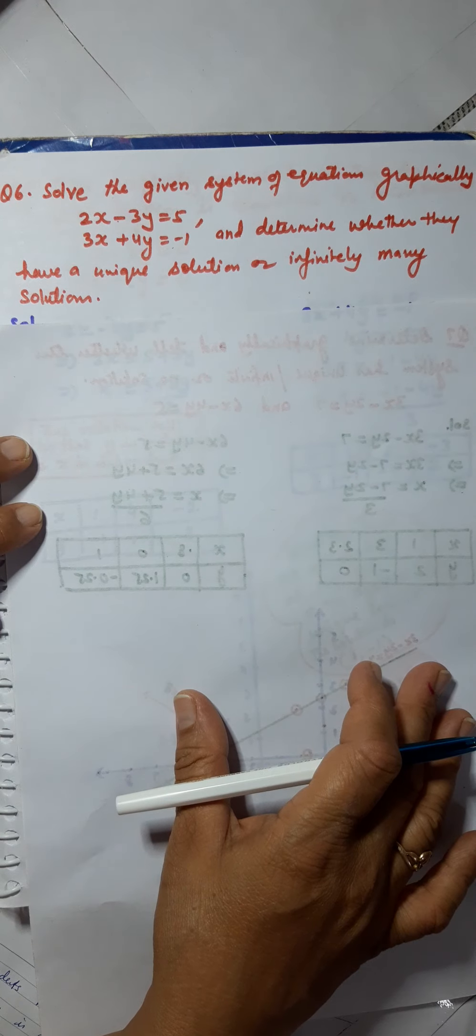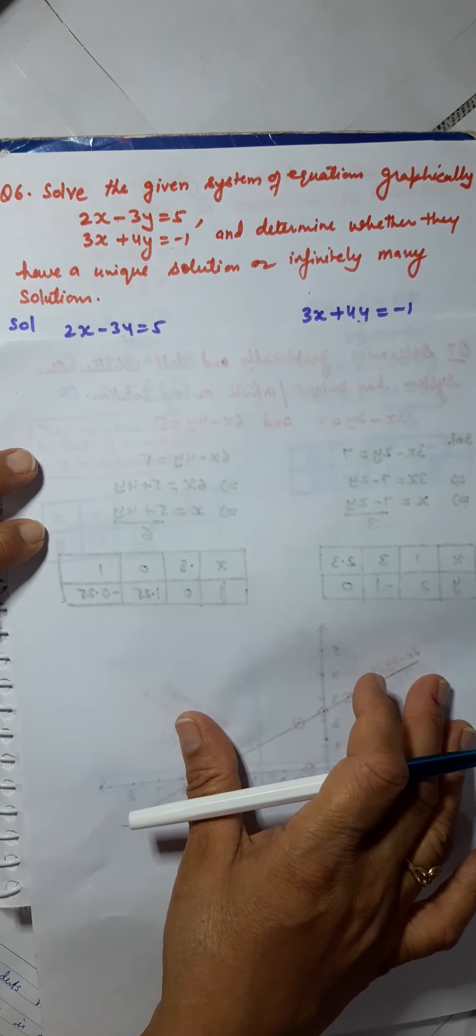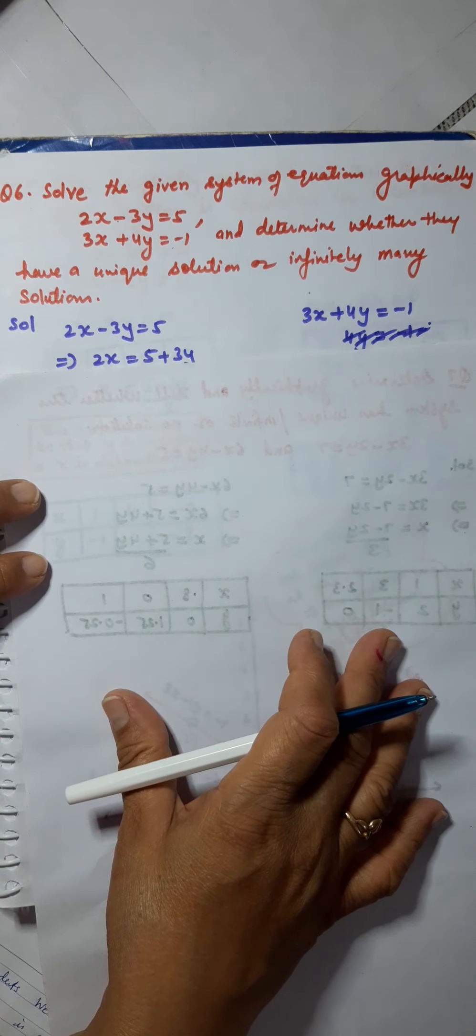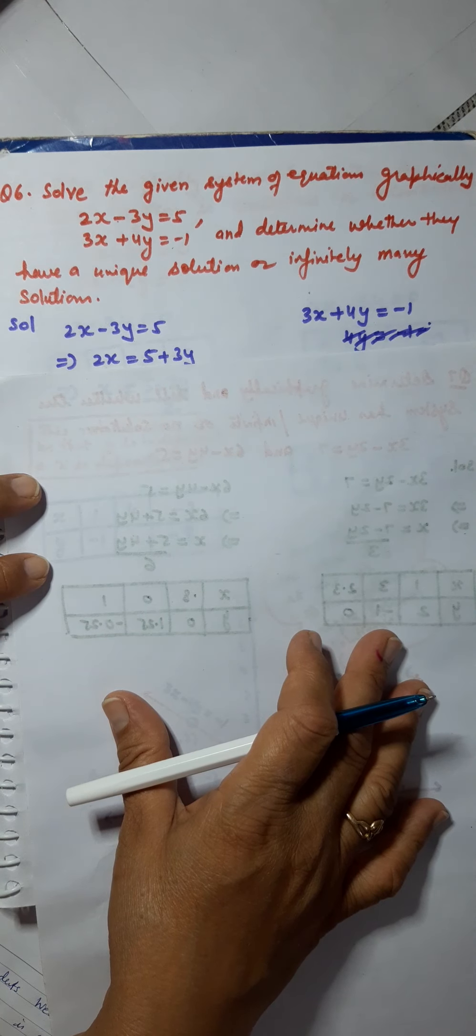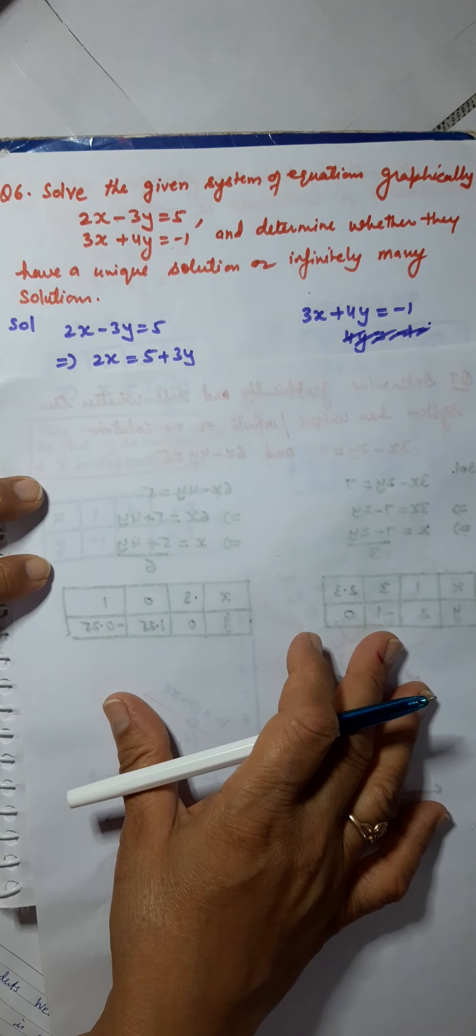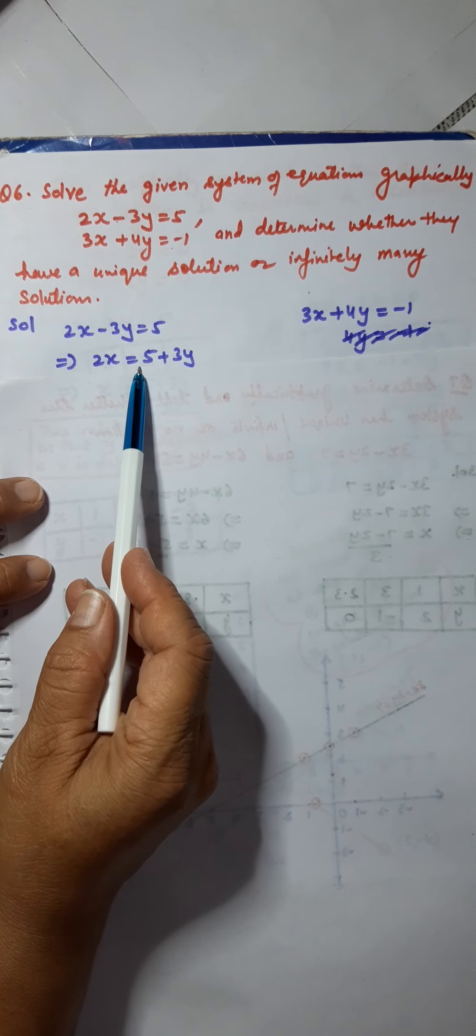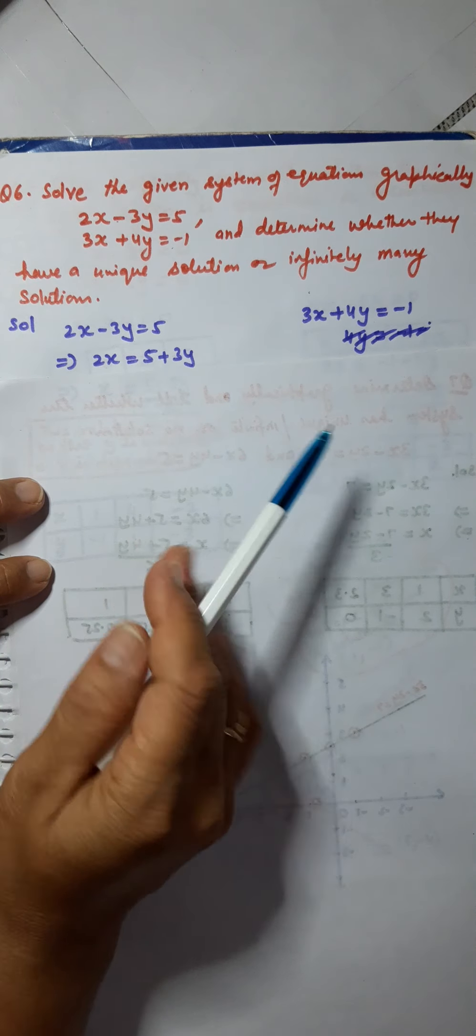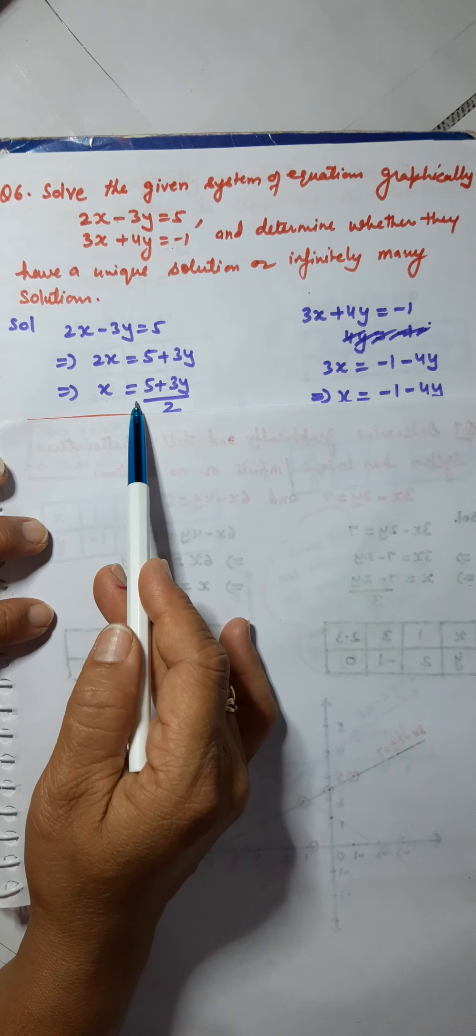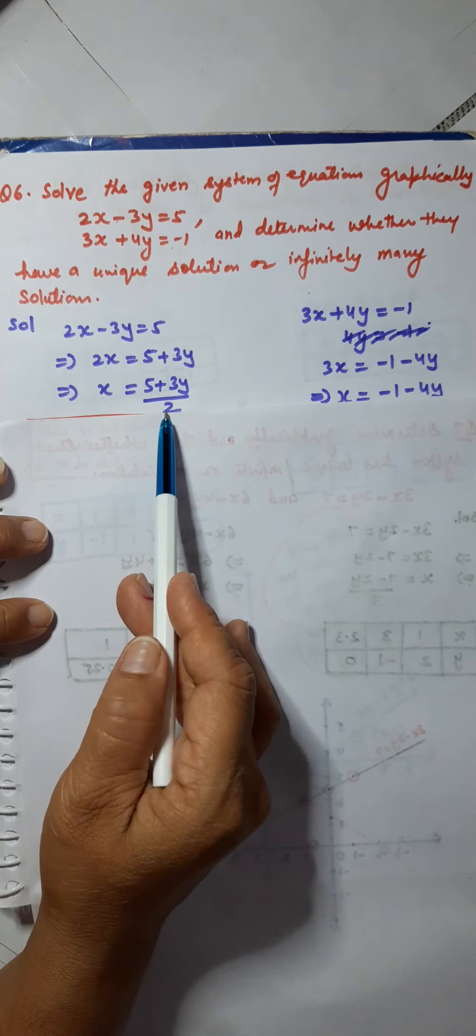As in 9th class, we have learnt how to create tables for plotting the graphs for these equations. We are going to follow the same method. 2x minus 3y equals 5 can be written as 2x equals 5 plus 3y, which implies x equals 5 plus 3y upon 2.